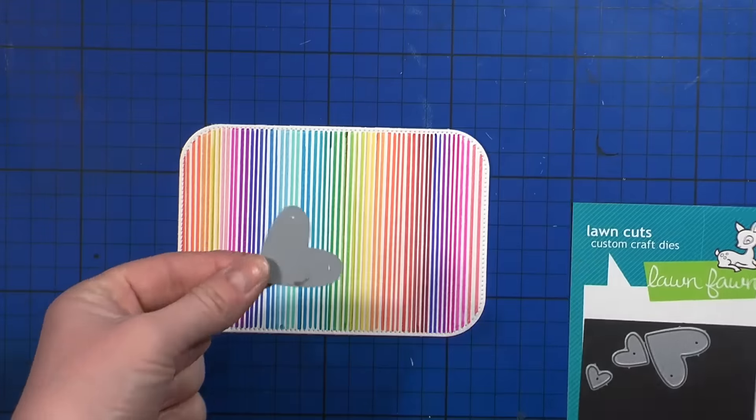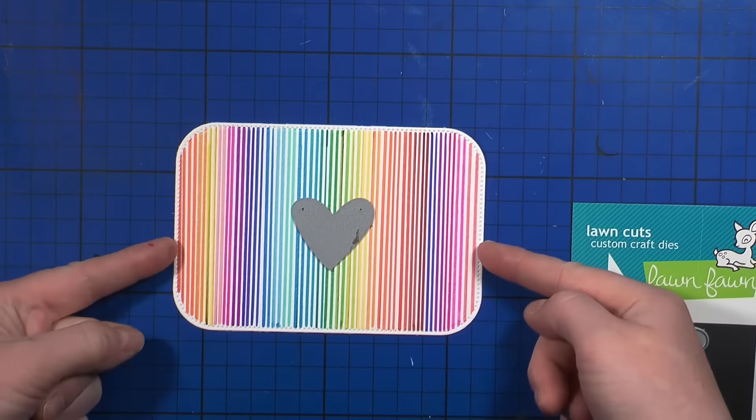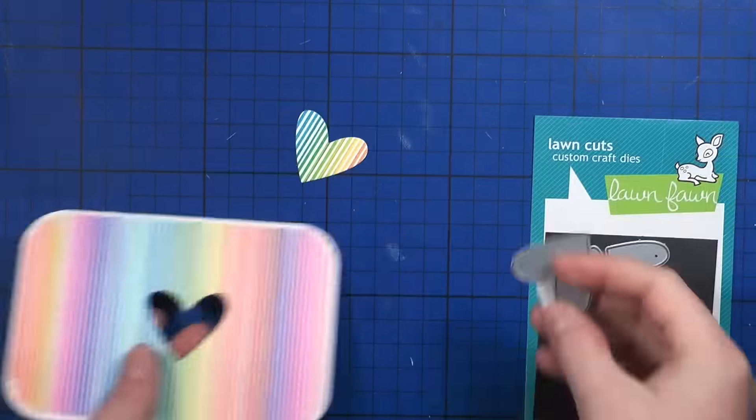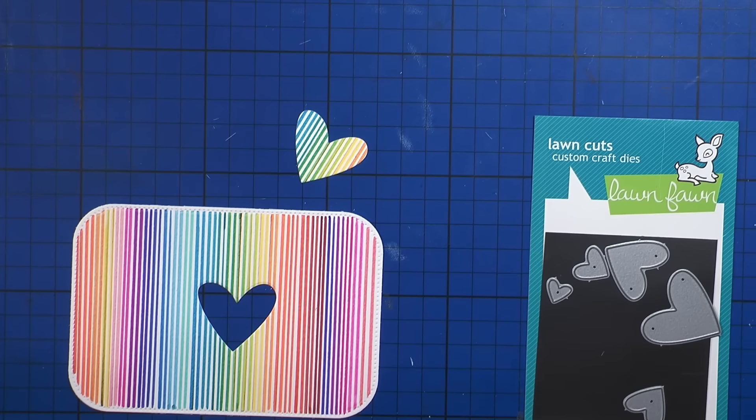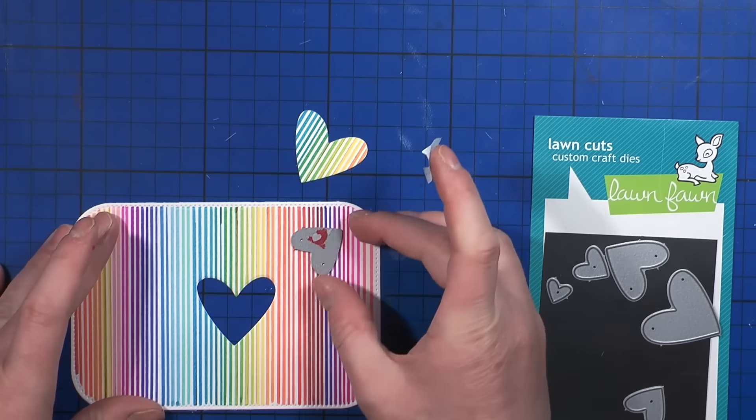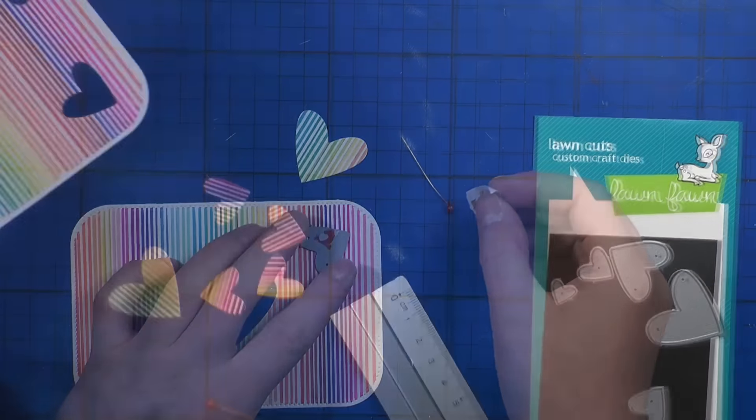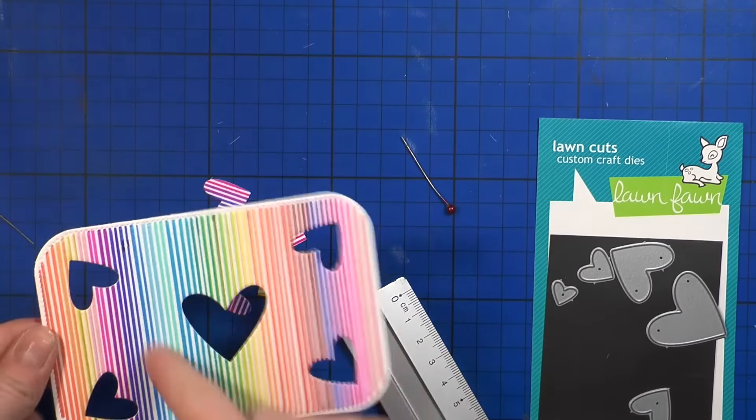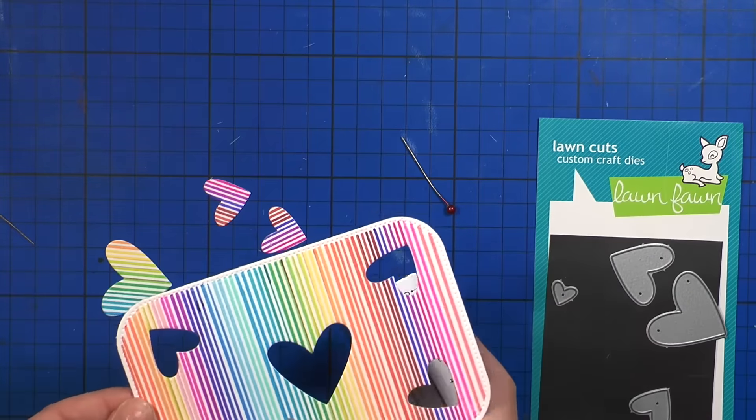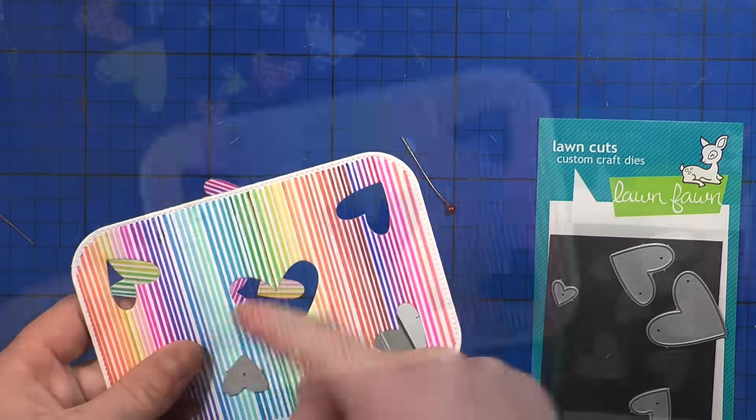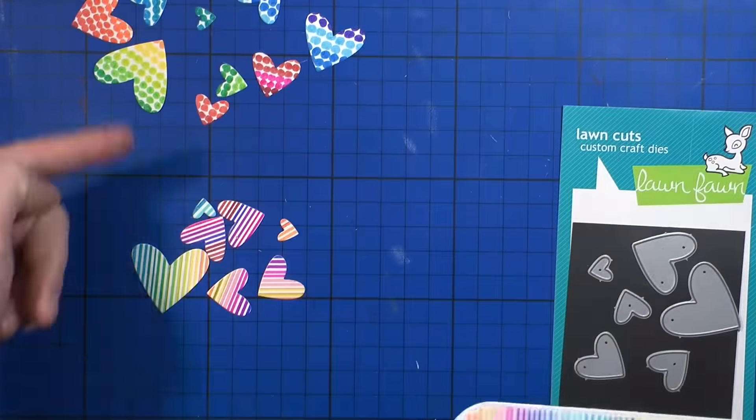And now I'm going to use this Lawn Pond die set. It's a heart die set. And I'm going to die-cut my hearts. Of course, the leftovers, all the colorful hearts, I will use on some other cards, which I will probably post on my Instagram. And this is how the panel will look like with the die-cut hearts.